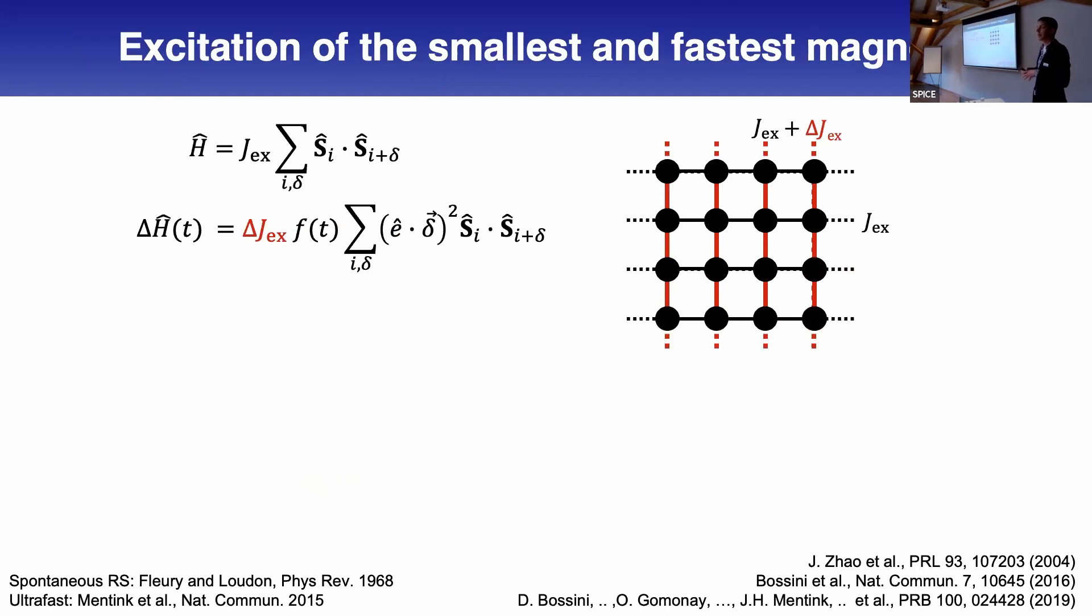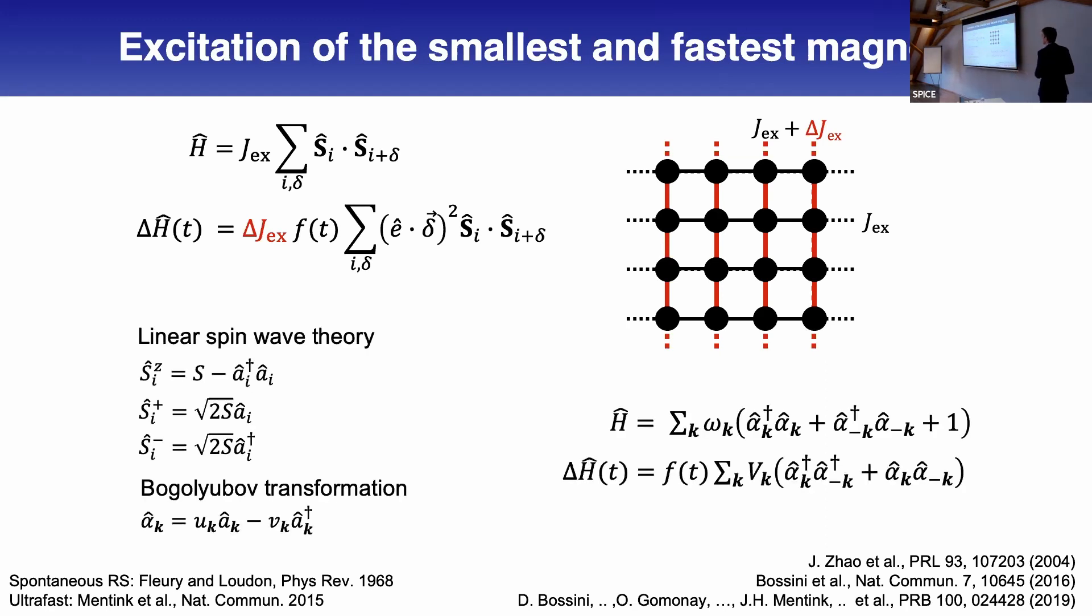You can do this and study it with optical spectroscopy, as has been known since the 1960s. This was work by Fleury and Loudon. They considered the Heisenberg model and Raman tensor, which relies on optical perturbation of exchange interactions. Using linear spin wave theory, you get the standard antiferromagnetic dispersion ωk.